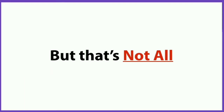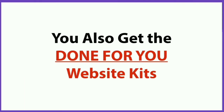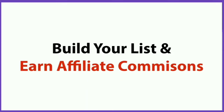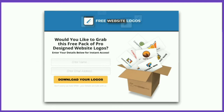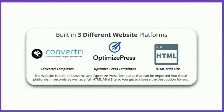But that's not all. You also get the done-for-you website kits, so you can build your list and earn affiliate commissions. All our website kits are built in three different platforms, including Convertory templates, Optimize Press templates, and an HTML mini-site, so you can choose the one which is best for you.